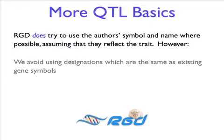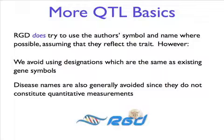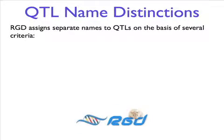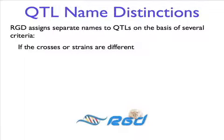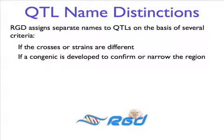However, there are exceptions. For instance, we avoid using designations which are the same as existing gene symbols, because both gene and QTL symbols are required to be unique within a species. Disease names are also generally avoided since they do not constitute quantitative measurements. Because a QTL is a statistical linkage between a quantitative trait and a genomic region and is dependent on the methods used, we create distinct QTL records and assign separate names on the basis of several criteria. For example, if the crosses or strains are different, or if a congenic is developed to confirm or narrow the region, then it's a new QTL.